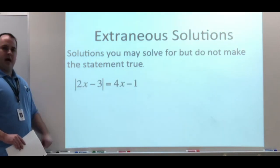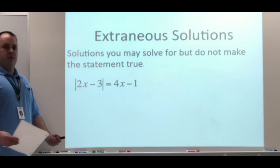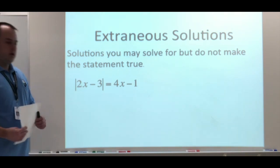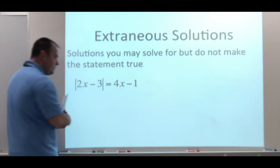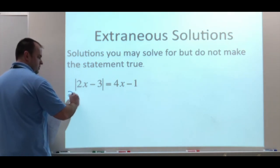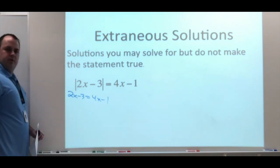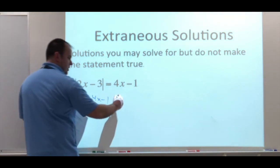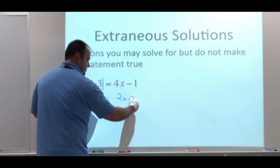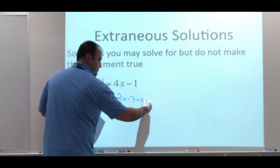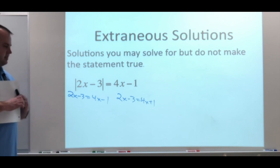So if we're looking at the equation, absolute value 2x minus 3 equals 4x minus 1, your first step is to solve it like normal. Take this equation, set it up: 2x minus 3 equals 4x minus 1. Just a quick review of how to solve. We have our one basic equation, 2x minus 3 equals negative 4x plus 1, making it the opposite.